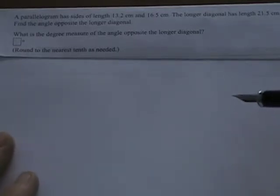A parallelogram has sides of length 13.2 centimeters and 16.5 centimeters. The longer diagonal has a length of 21.5 centimeters. Find the angle opposite of the longer diagonal, and we're asked to give that in degrees and round to the nearest tenth.